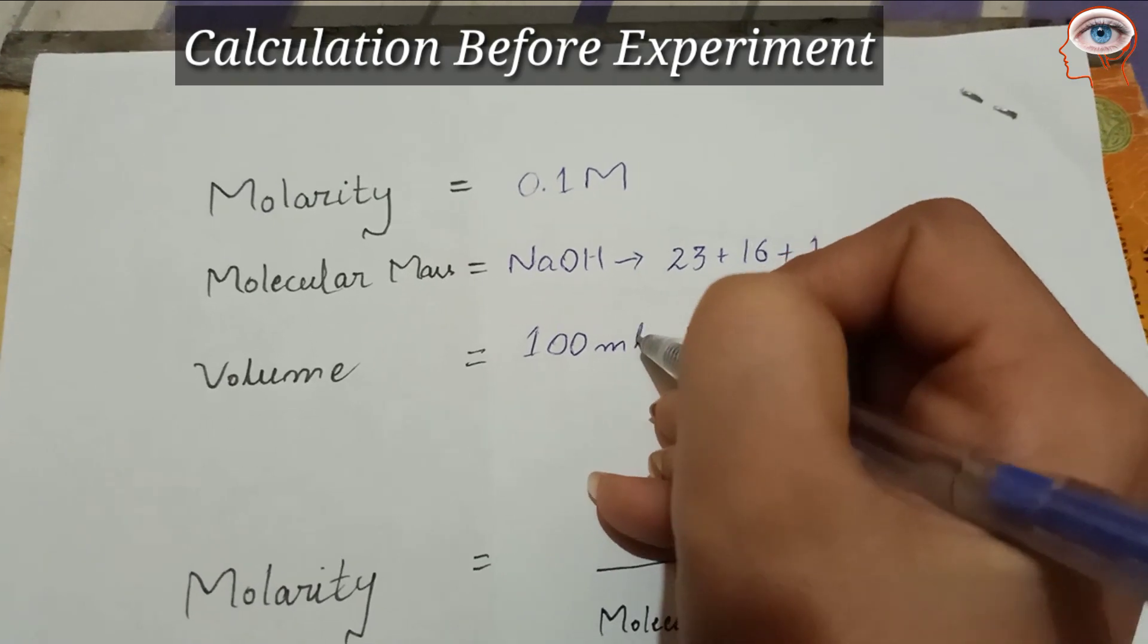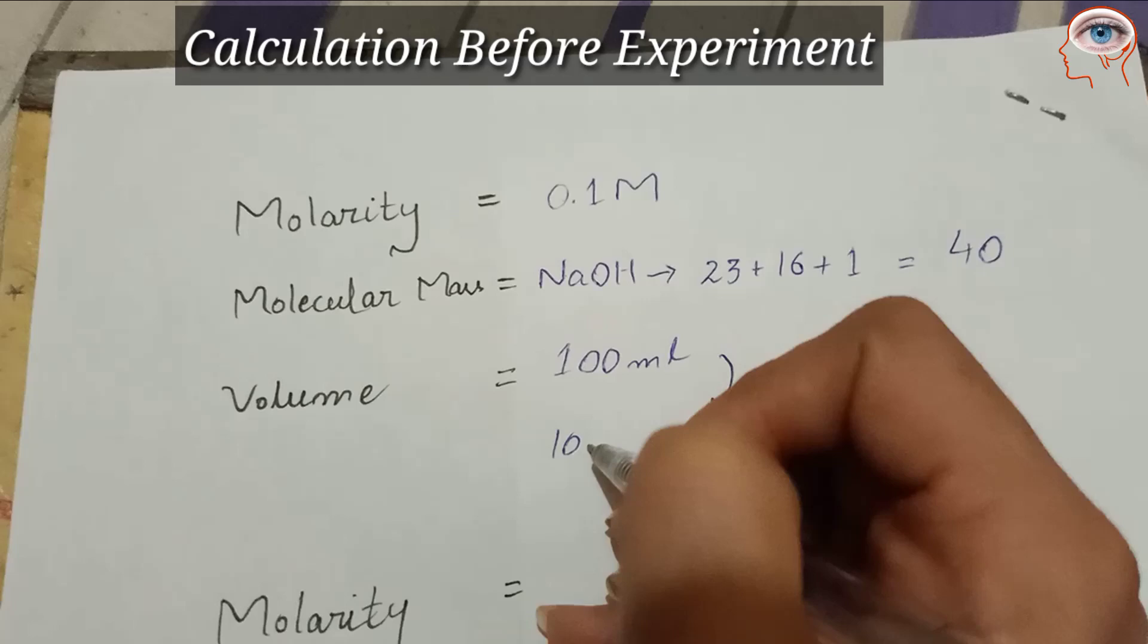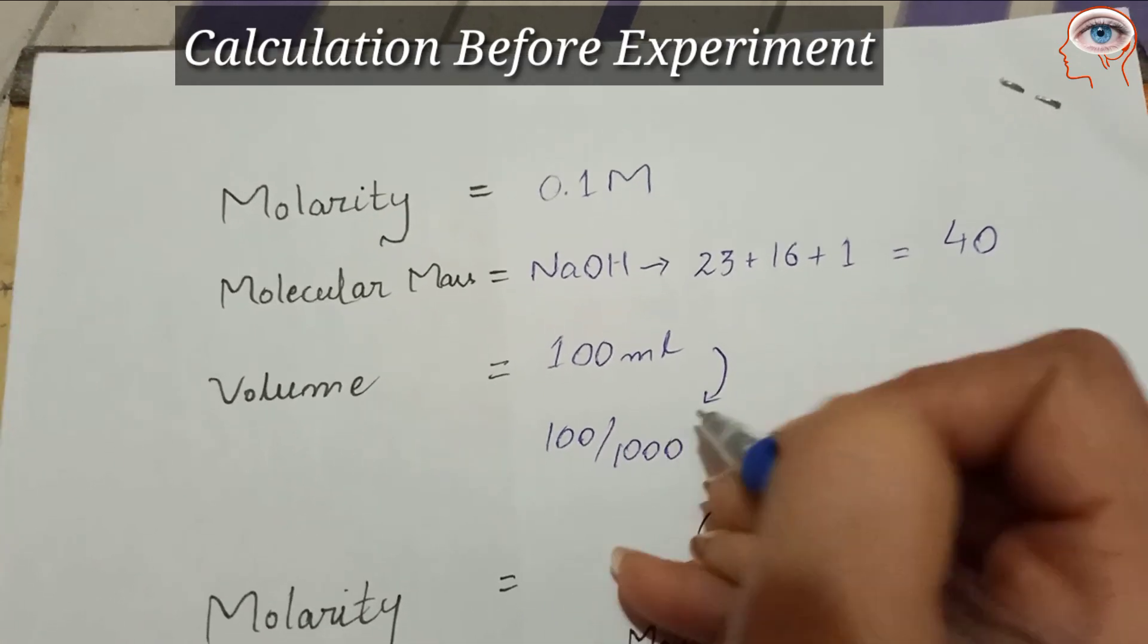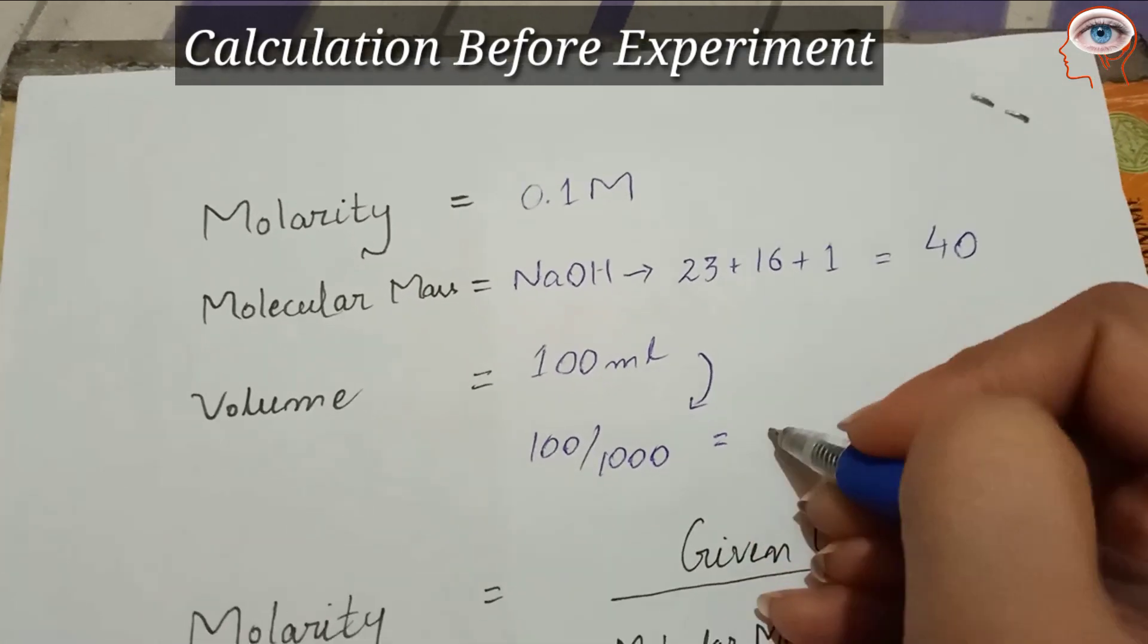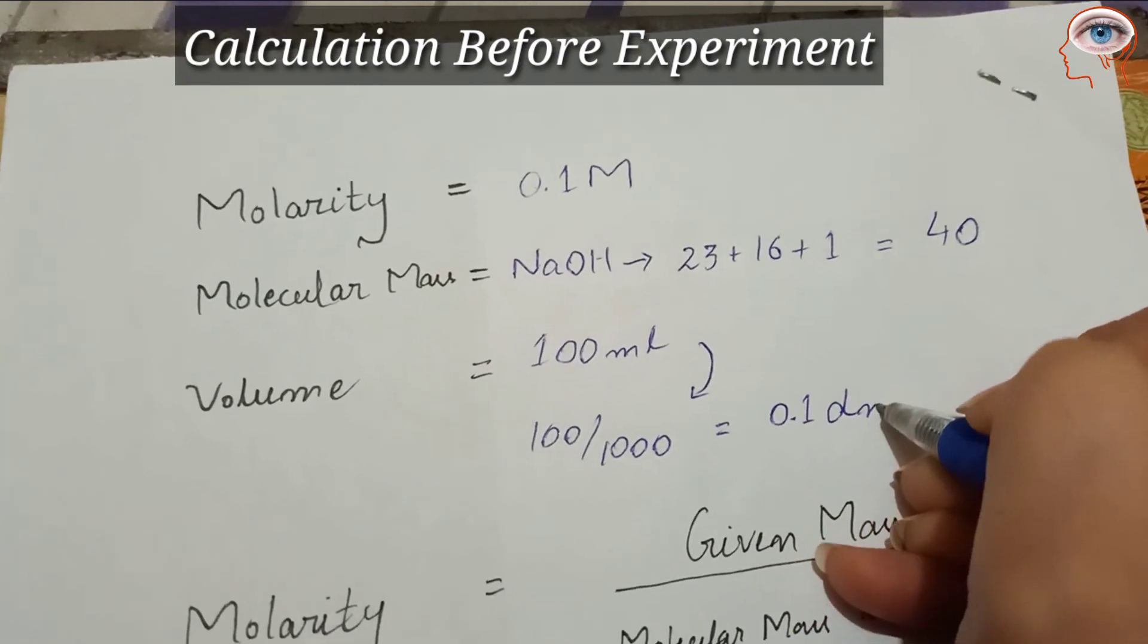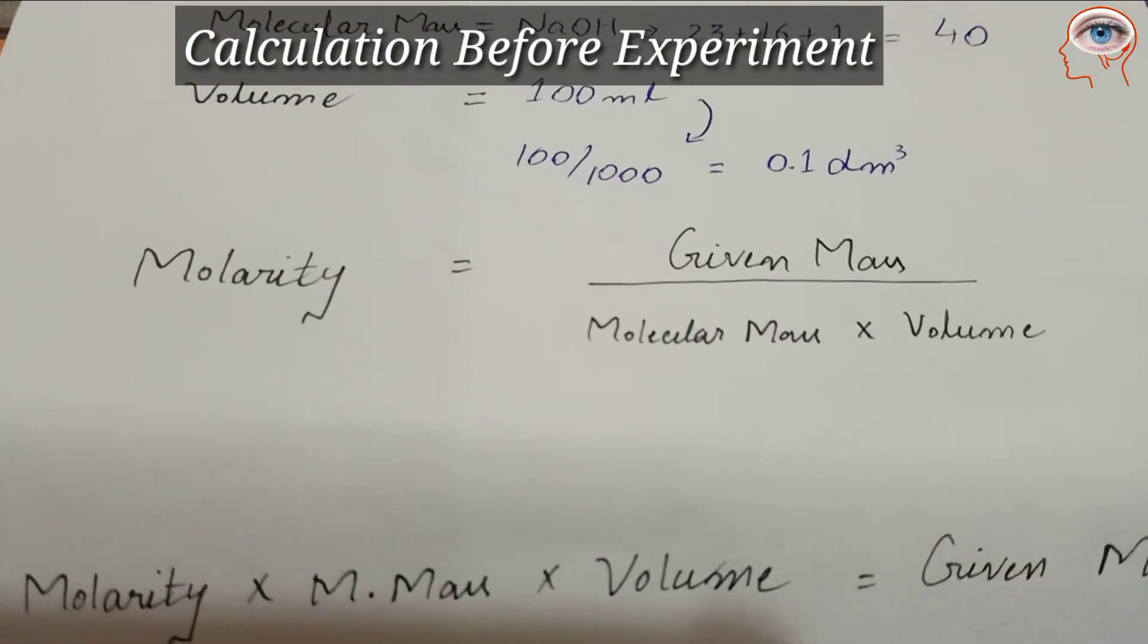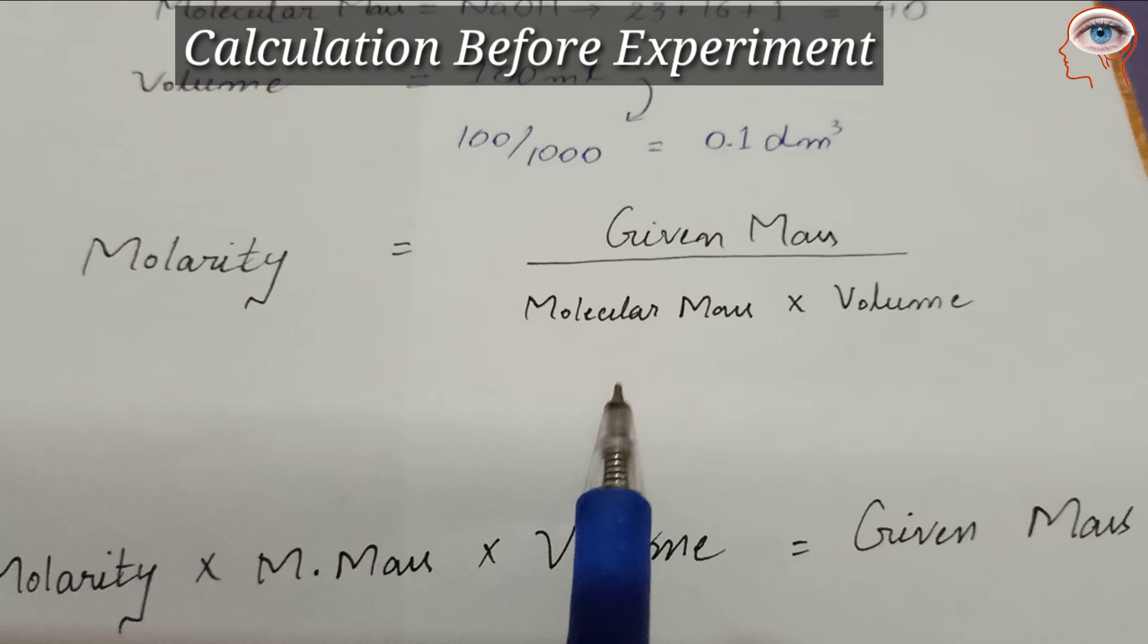First, we have to convert 100 ml into decimeter cube by dividing by 1000, giving 0.1 decimeter cube. In the molarity formula, we need volume in decimeter cube. The formula is molarity equals given mass over molecular mass multiplied by volume.